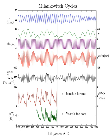Deep-sea core samples show that the interglacial interval known as marine isotope stage 5 began 130,000 years ago. This is 10,000 years before the solar forcing that the Milankovitch hypothesis predicts. This is also known as the causality problem, because the effect precedes the putative cause.